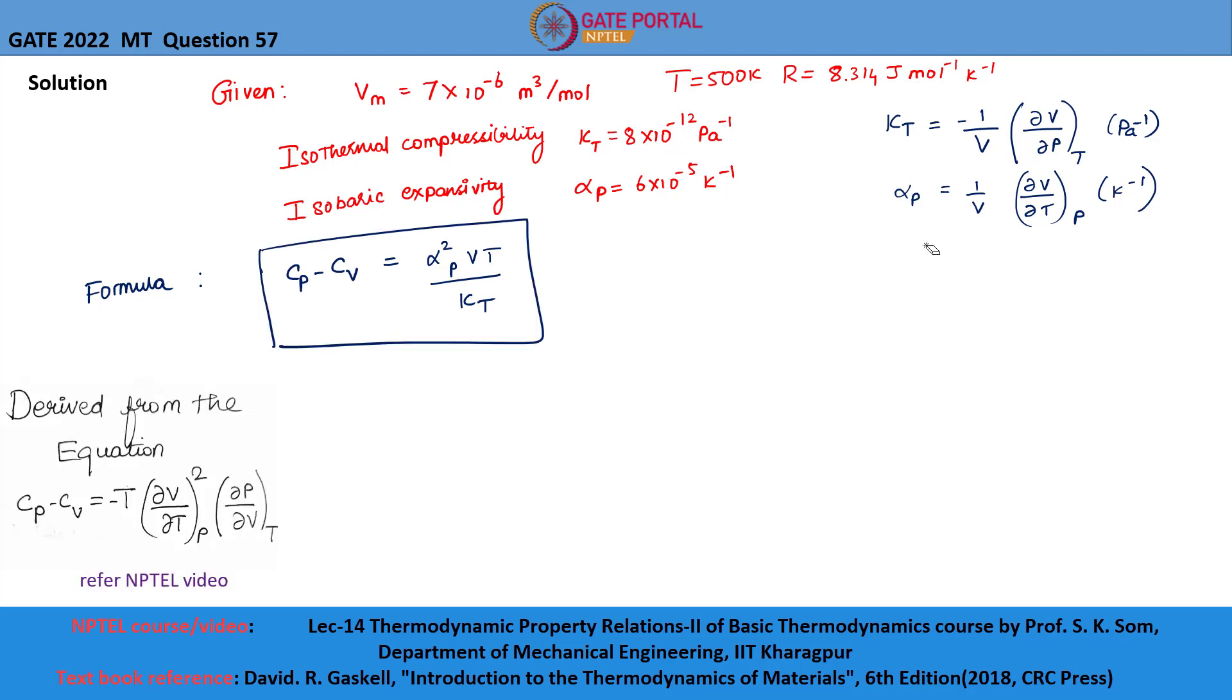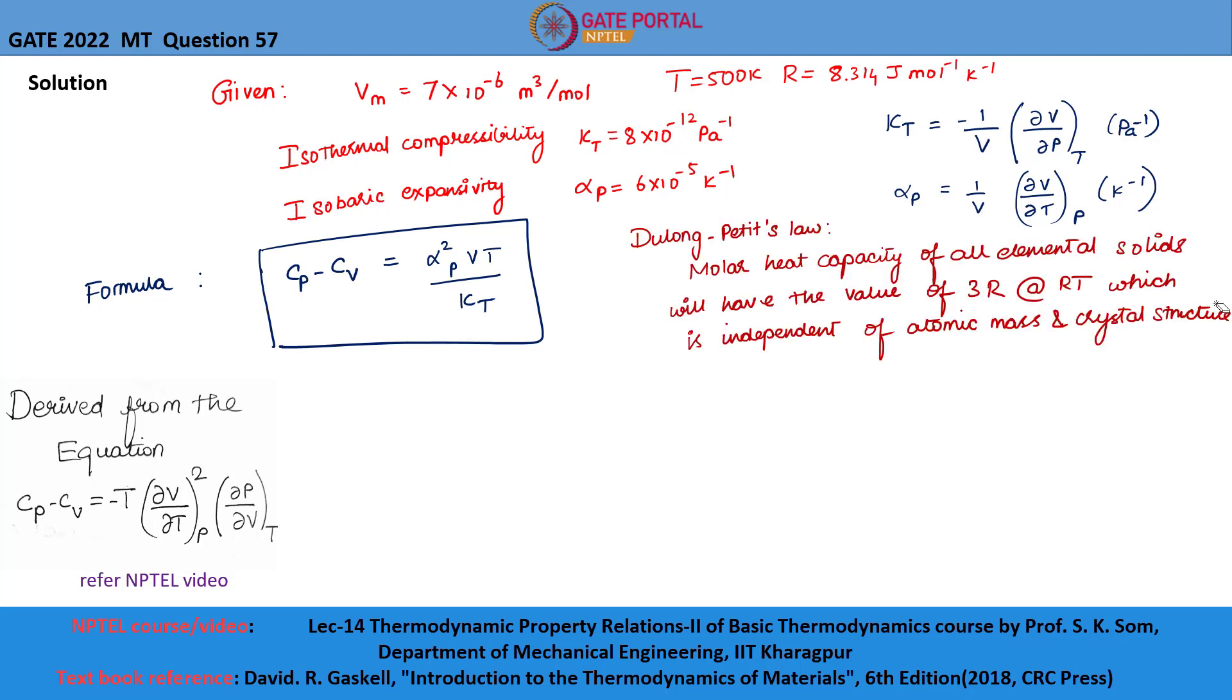Before going to the solution, let us know about Dulong-Petit's law. Dulong-Petit's law states that the molar heat capacity of all elemental solids will have the value of 3R at room temperature, which is independent of atomic mass and crystal structure. That is, Cp equals 3R, where R is the gas constant.